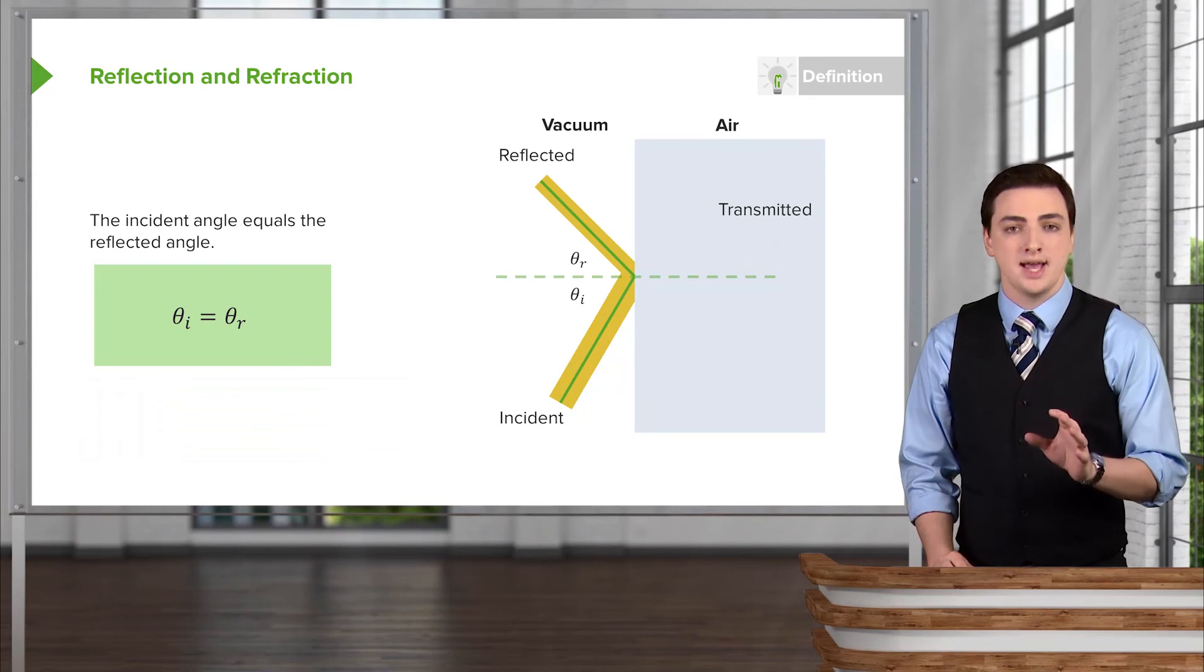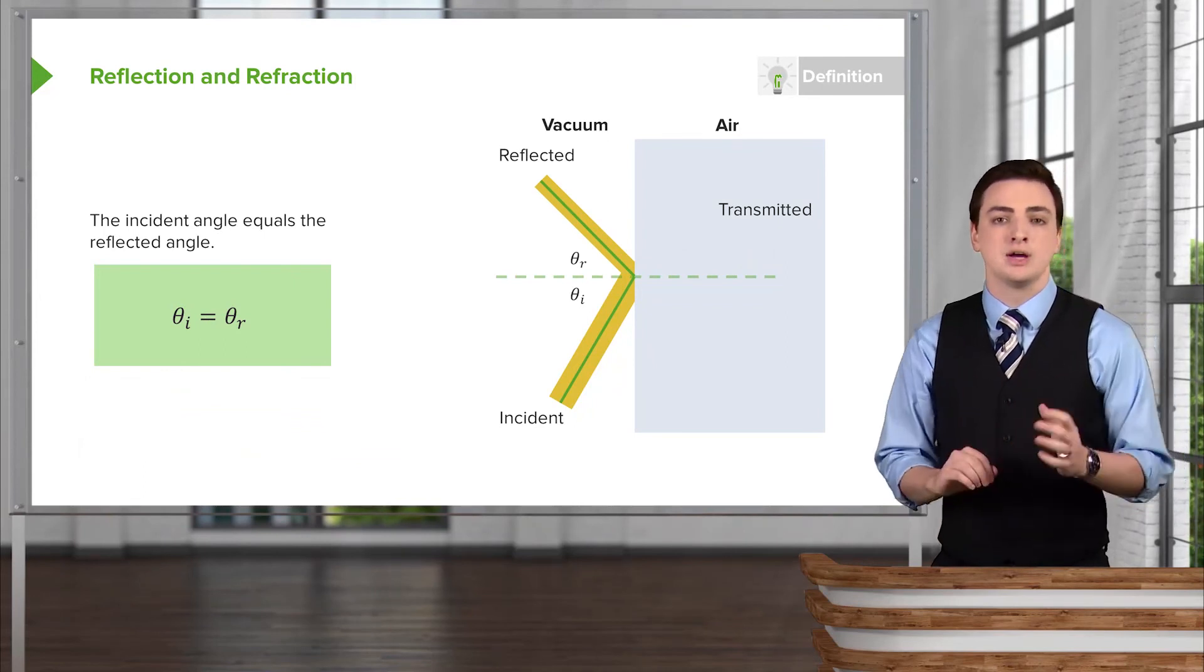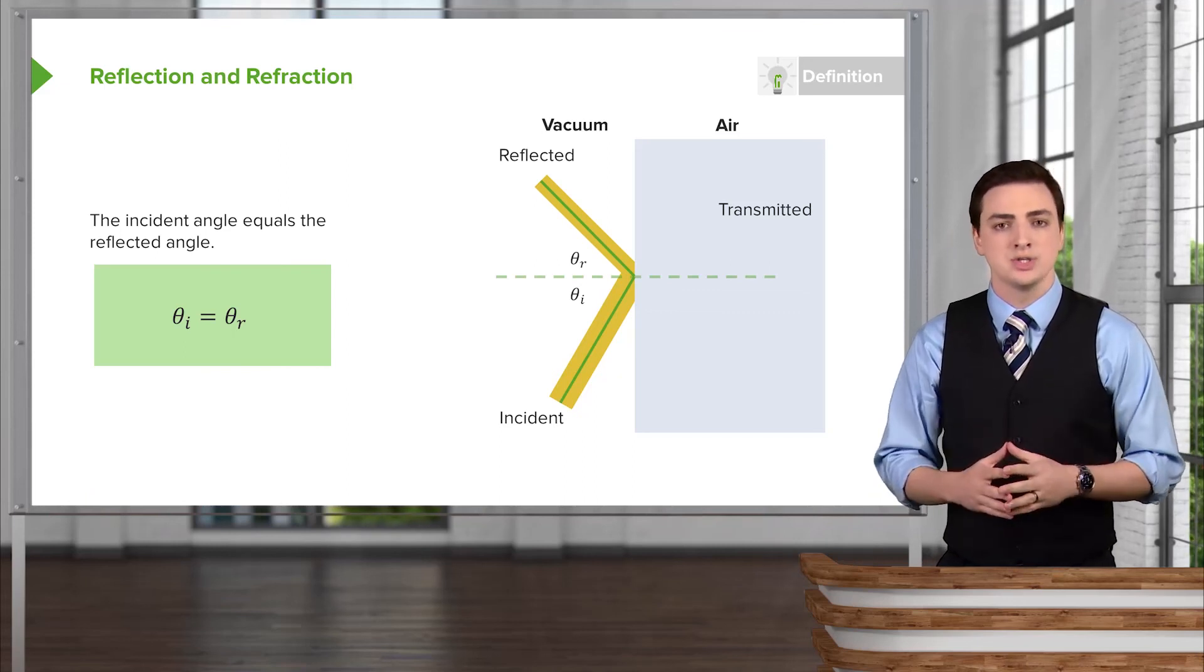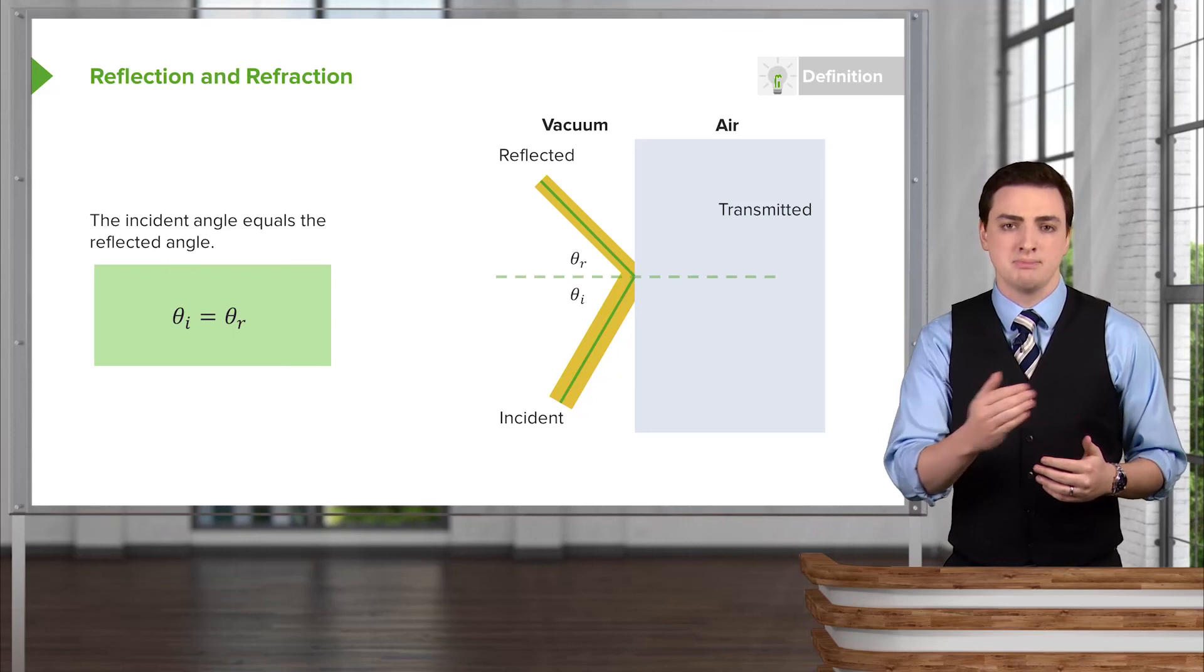The incident angle and the reflected angle, ignoring the transmitted amount of light, are always going to be the same. This follows our intuition that if light hits a surface and bounces off, it will bounce off at the exact same angle that it came in at.